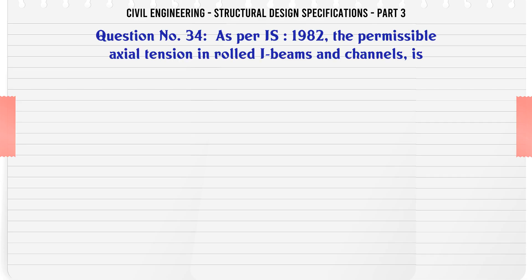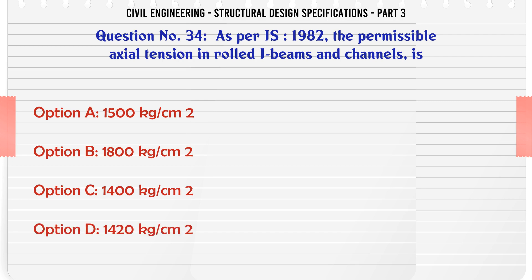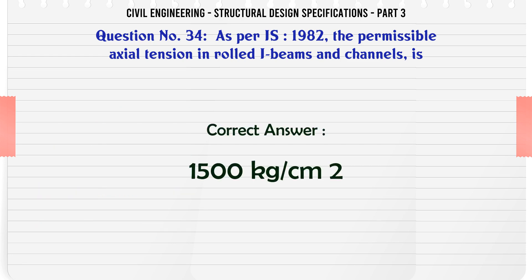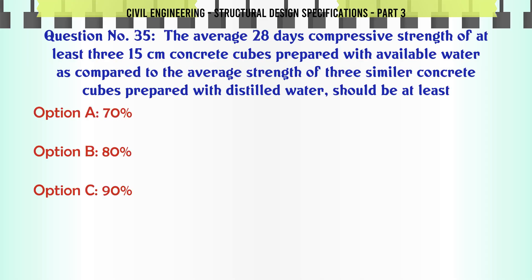As per IS 1982, the permissible axial tension in rolled I-beams and channels is: a. 1,500 kg/cm², b. 1,800 kg/cm², c. 1,400 kg/cm², d. 1,420 kg/cm². The correct answer is: 1,500 kg/cm².